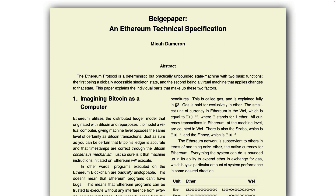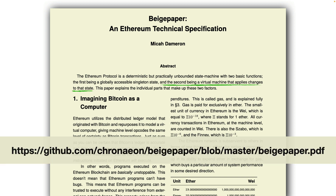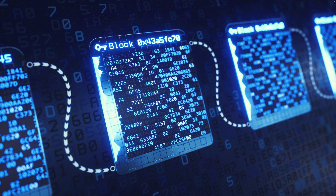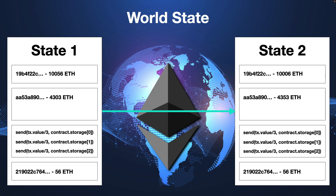If you look at a computer science explanation of the Ethereum protocol, the Ethereum Beige Paper — a more easily understandable version of the Ethereum Yellow Paper — describes the Ethereum protocol as a deterministic but practically unbounded state machine with two basic functions: first, a globally accessible singleton state, and second, a virtual machine that applies changes to that state. The Ethereum blockchain contains a list of transactions that represent valid changes between states.